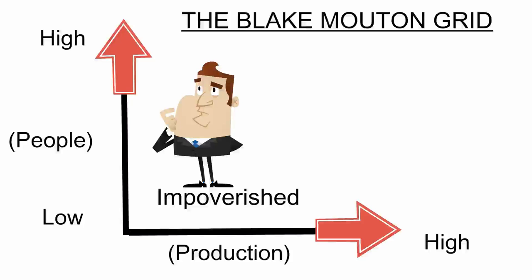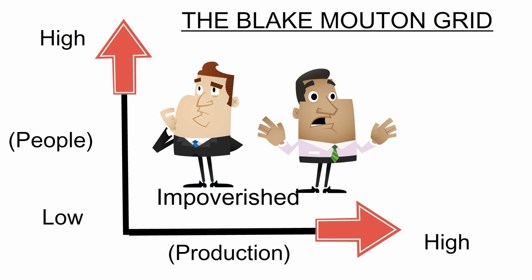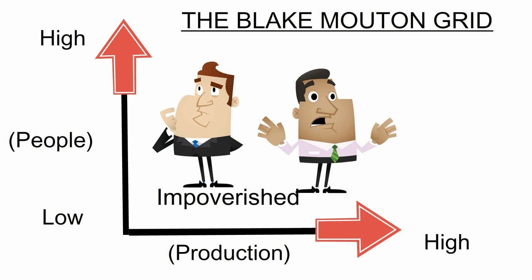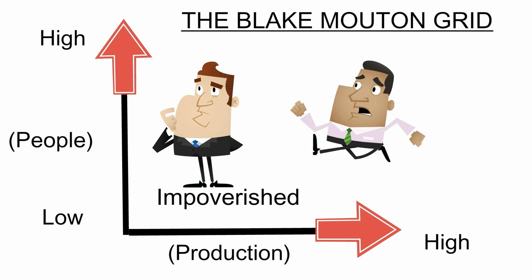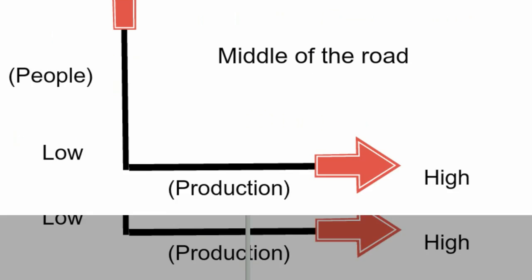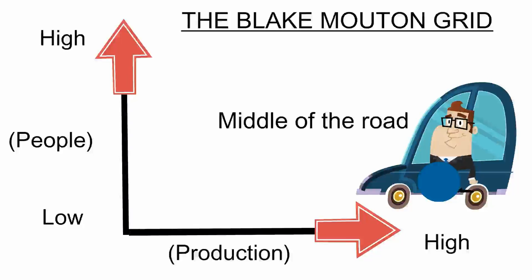Impoverished Leadership. Impoverished leaders are ineffective. They pay little attention to either the needs of employees or operational efficiency. The workplace is chaotic and the workforce are demotivated. Middle of the Road Leadership. This style compromises between people and production. The difficulty here is that the leader is probably settling for an average performance — not really good enough.